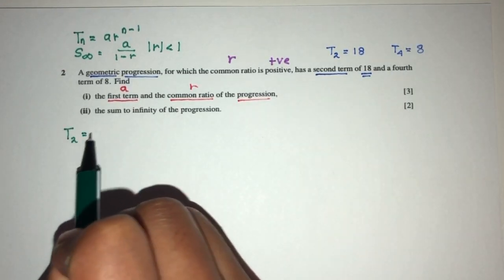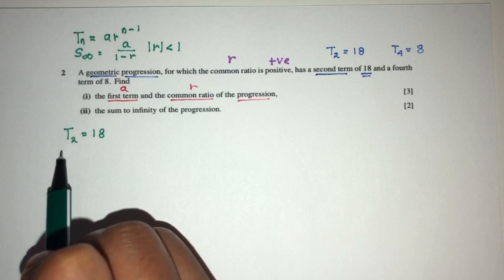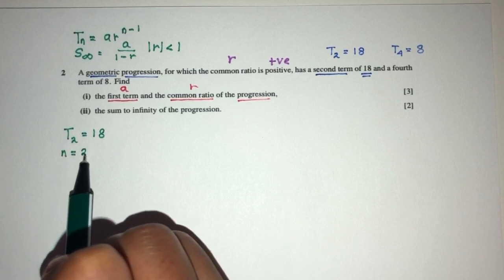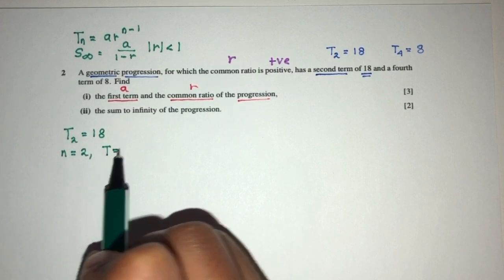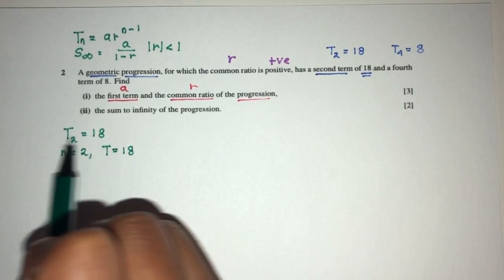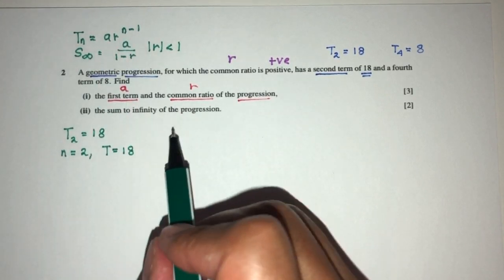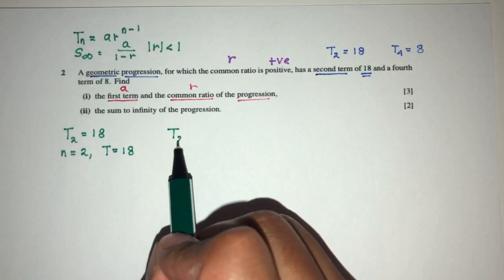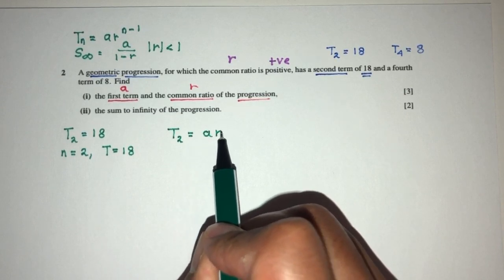First one, term number 2 is 18. So, it means that when the value of n is equal to 2, the term is equal to 18. We place back in the first equation. So, t2 is equal to a, we don't know, r, we don't know.